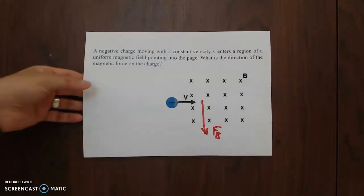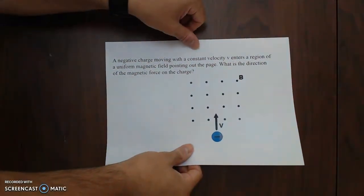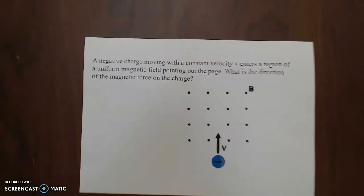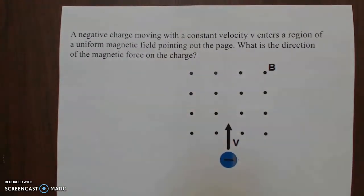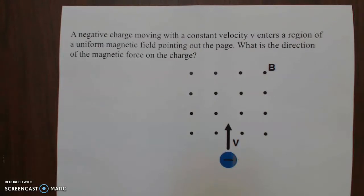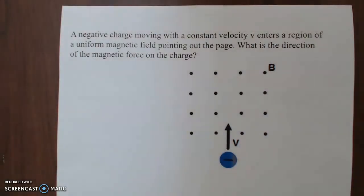So that's the idea — we apply the right hand rules. Let's try another example. Again, a negative charge moving with a constant velocity enters a region of a uniform magnetic field pointing out of the page. The velocity of the charge is going upward or north.